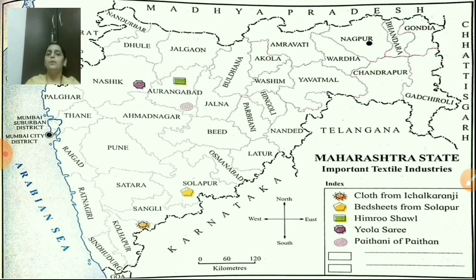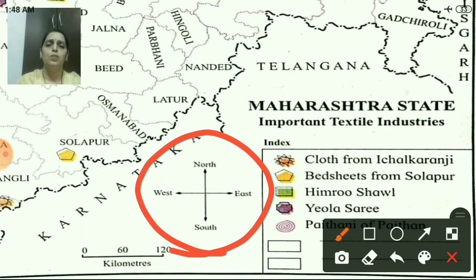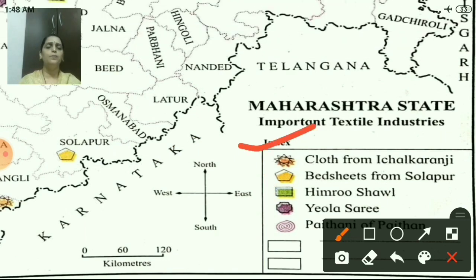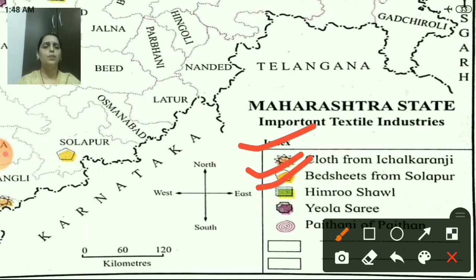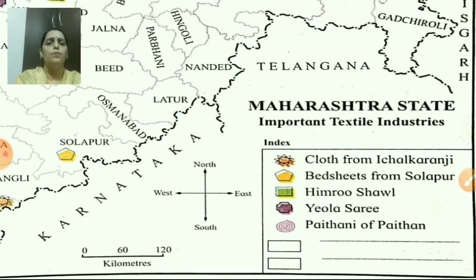Now we are going to read the map of Maharashtra state showing important textile industries. The direction of the map: north towards your head, south towards your toes, east to your right hand side, and west to your left hand side. The index shows: cloth from Ichalkaranji, bed sheets from Solapur, Himru shawl, Yeola sari, and Paithani sari.